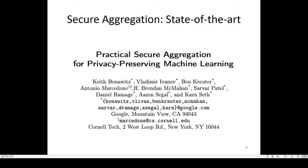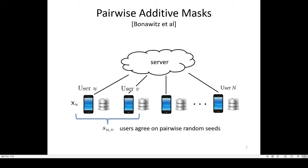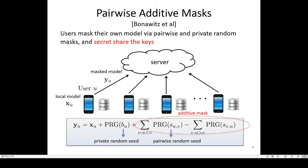Here is the state of the art of secure aggregation. A Google research team proposed great work on practical secure aggregation. It protects the privacy of individual models by utilizing a protocol known as additive masking. There are N users and a single server in the network, and each user has a local model. To protect the privacy of individual models, each pair of users agree on pairwise random seeds to mask the models. Each user generates a masked model by using randomness based on the private seed and the pairwise seed. Users send the masked model to the server instead of the local model, such that the server cannot learn the local model.